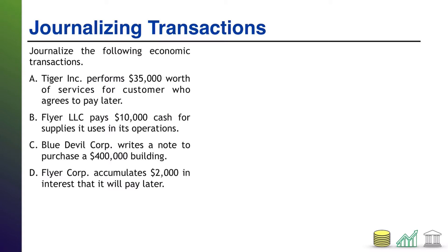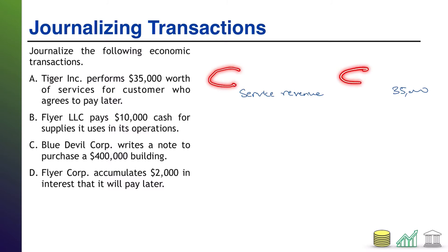Transaction A: Tiger Inc. performs $35,000 worth of services for a customer who agrees to pay later. When you do a job, that is called earning the revenue, so what we're going to record here is some service revenue. Service revenue is going up, and when revenues go up, that's a credit. So in this journal entry, service revenue is $35,000 on the credit side.